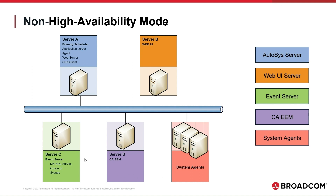Server C is the Event Server — a database server where the Autosys database will reside. It can be Microsoft SQL Server, Oracle, or Sybase. This topology is the most basic type. It can be used in a production environment, but does not have a failover option, and there are risks of data loss and high recovery times in case of failure.